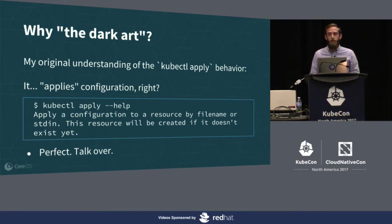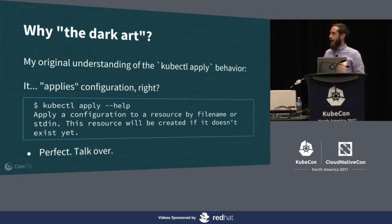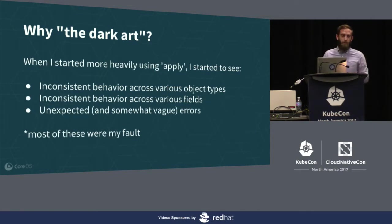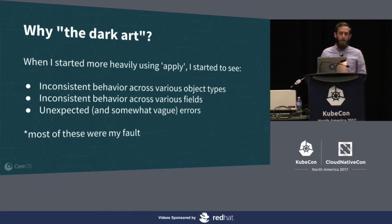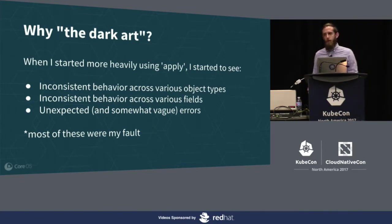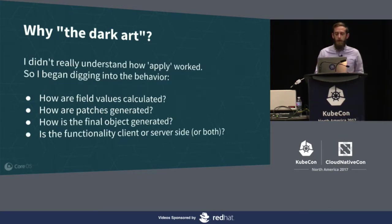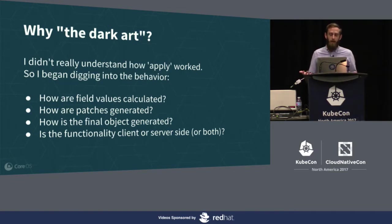I personally didn't really understand most of it. Putting the abstract together for this talk, there was a ton of stuff I wanted to get into, but what I realized in putting this presentation together is that there's just too much to cover in 30 minutes. So I'll do my best, but there's going to be some homework at the end. When I started using apply more heavily, I was seeing inconsistent behavior across various object types and fields, and then unexpected, somewhat vague errors. Most of these were my fault because I didn't actually understand the underlying behavior of apply.